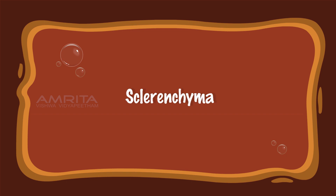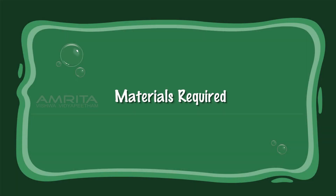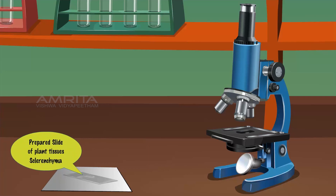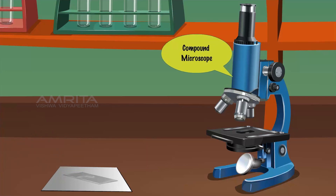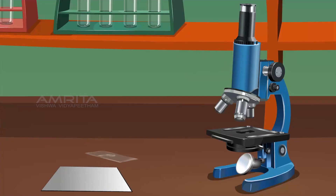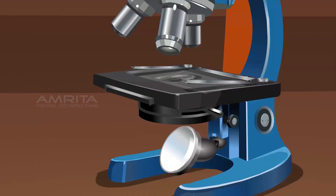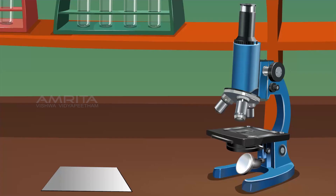Sclerenchyma. Materials required: prepared slide of sclerenchyma tissue and a compound microscope. Procedure: Place the prepared slide of sclerenchyma tissue on the stage of the compound microscope. Observe the features of the sclerenchyma tissue through the lens of the compound microscope.